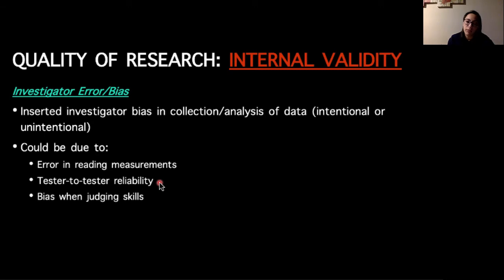Other types of investigator error could be bias when you're judging skills, when you're using a personal evaluation instead of a standardized criteria or test. Another example could be lack of experience using the equipment. So if you just haven't done something for very long, sometimes you read things wrong, you don't calibrate correctly, that would be investigator bias.